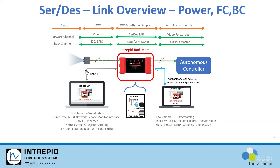We have a USB Type 3 connection back to our PC where we can monitor and see the health of the device and see what's going on with the data logging. We also have a 10 gigabit per second link that you can stream out raw pixel or raw video images for visualization in a vehicle.